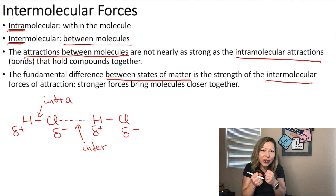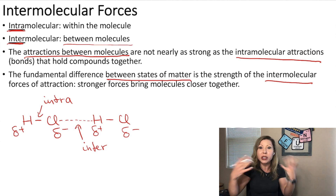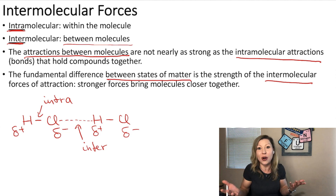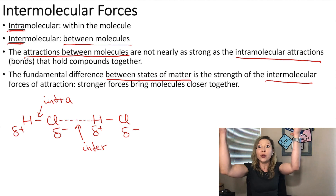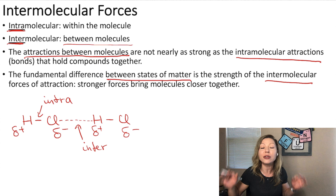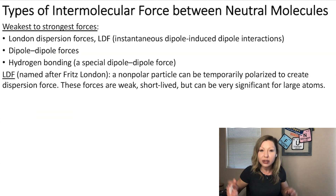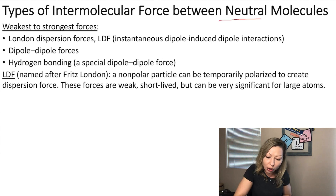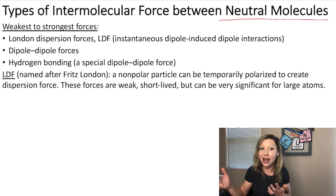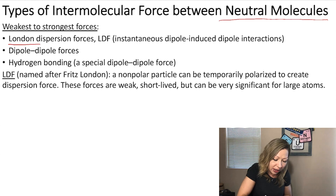If there is a lot of attraction between the liquid molecules, it's going to be harder to get to the gas phase, whereas where there is small attraction, it's going to be easier to evaporate from a liquid into a gas phase. Now the question is, how do we figure out how strong these intermolecular forces are? We have to look at the three types of intermolecular forces between neutral molecules, and I'm going to start with the weakest and go to the strongest. The weakest type is the so-called London dispersion forces, or LDF.